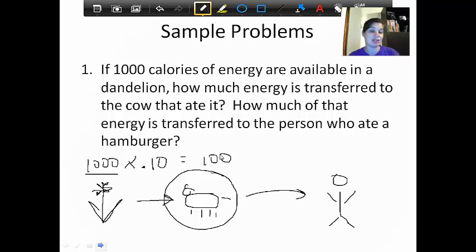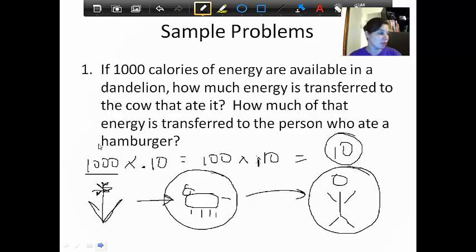The next question is how much of that is transferred to the person who ate the hamburger, so the secondary consumer. Here's another step in a trophic level, which means again only 10% is passed on. So 100 times 0.10, which some of you can do in your head I'm sure, equals 10 calories. So from that original 1000 calories that was in that single dandelion, the human ended up with 10 calories at the end, based on that model of the energy pyramid.